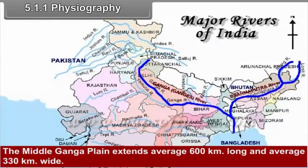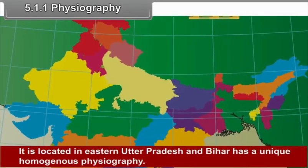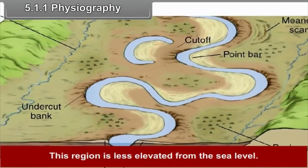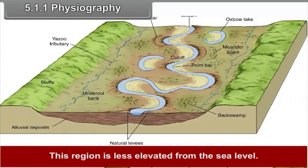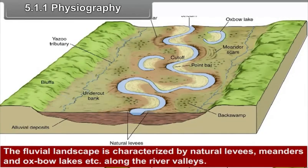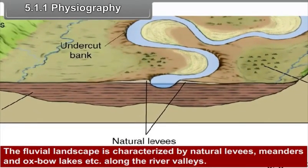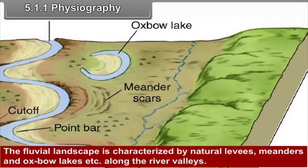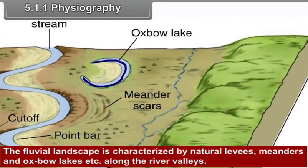The middle Ganga plain extends on average 600 km long and 330 km wide. It is located in eastern Uttar Pradesh and Bihar and has a unique homogeneous physiography. This region is less elevated from sea level. The fluvial landscape is characterized by natural levees, meanders and oxbow lakes along the river valleys.